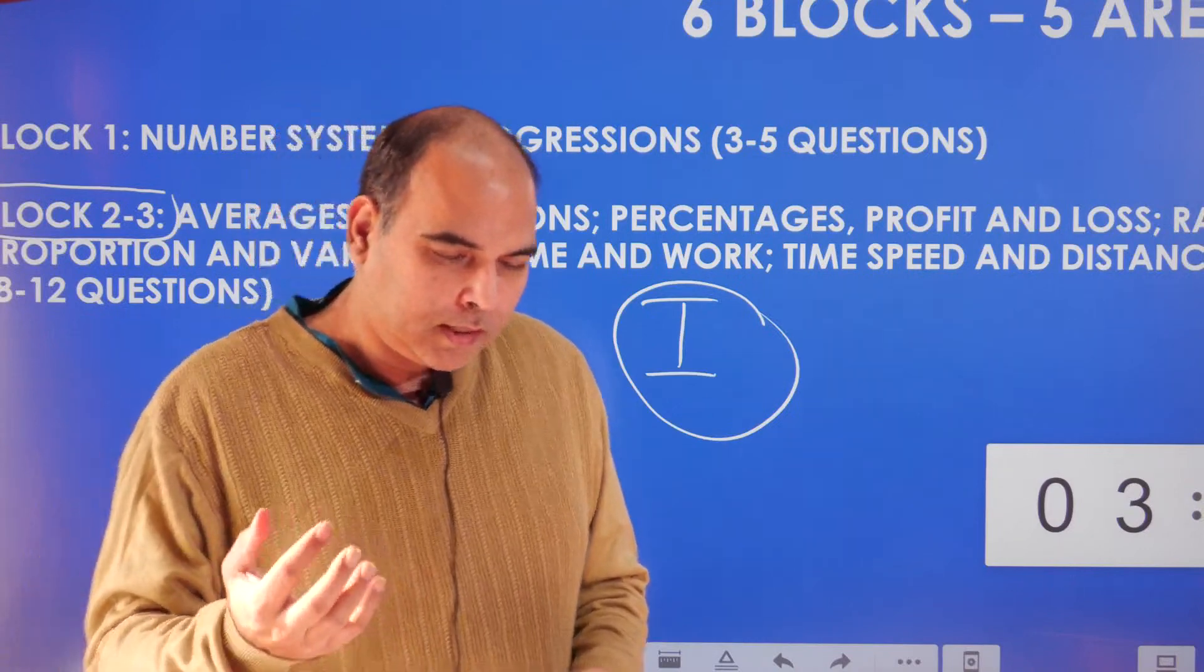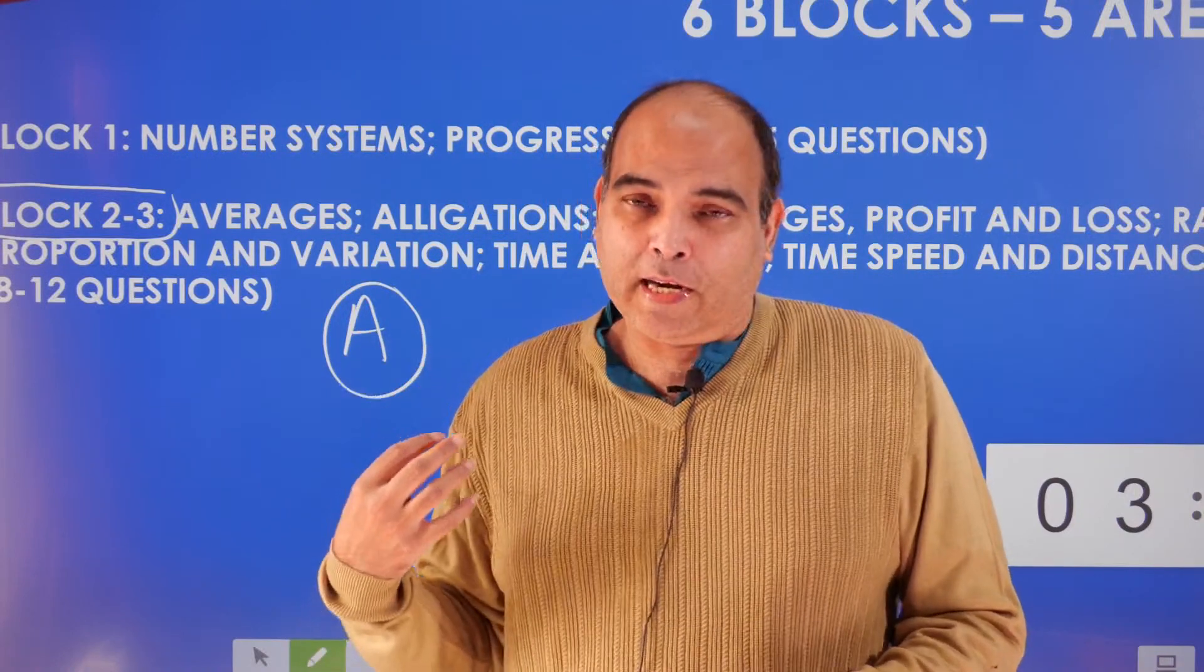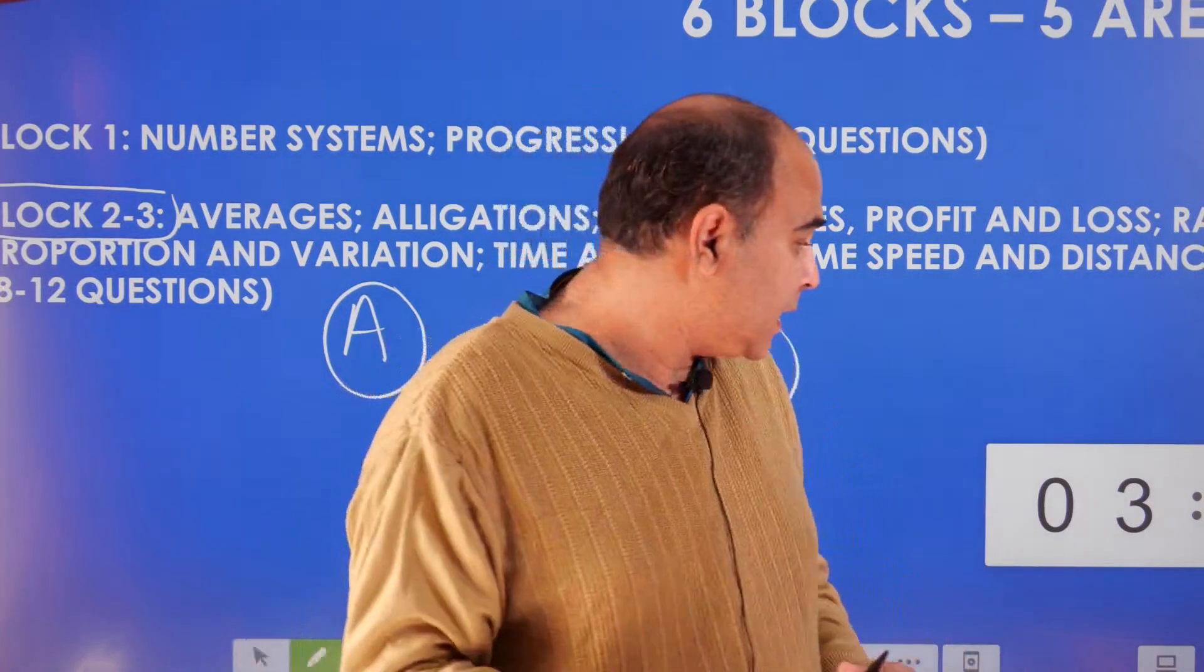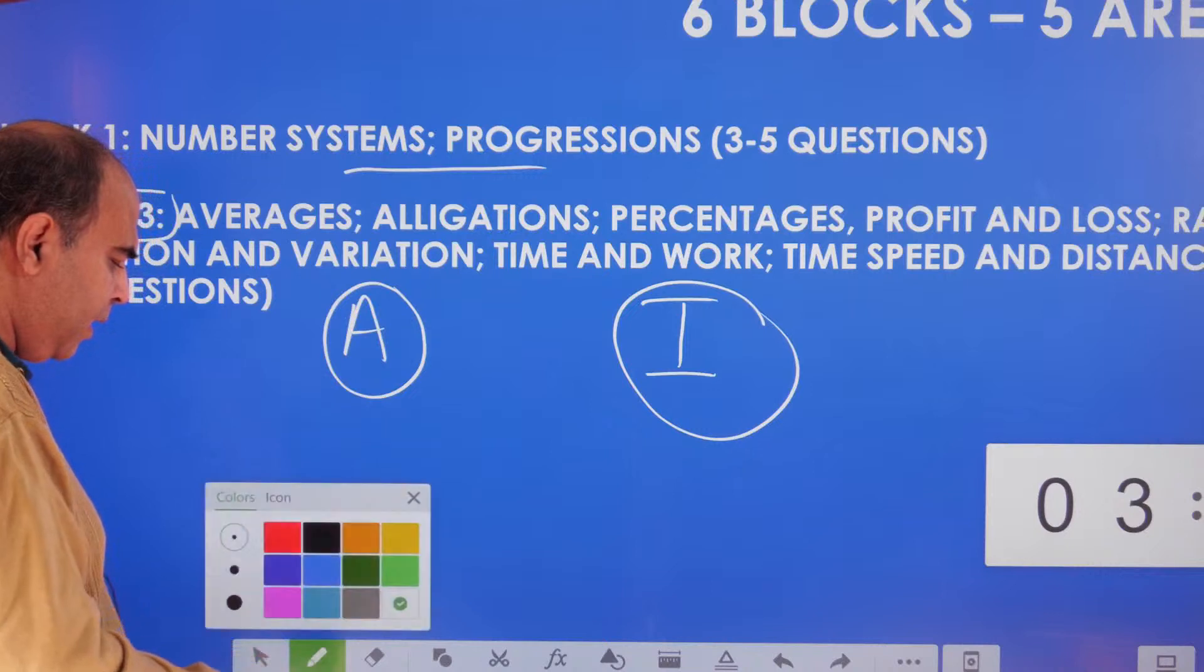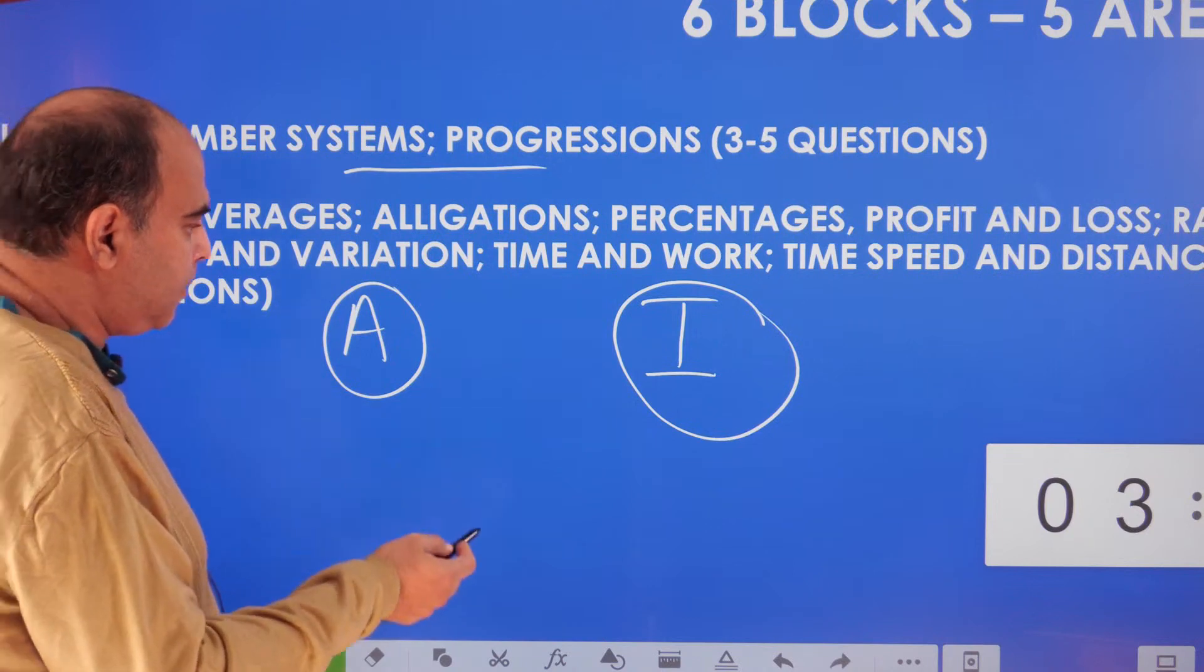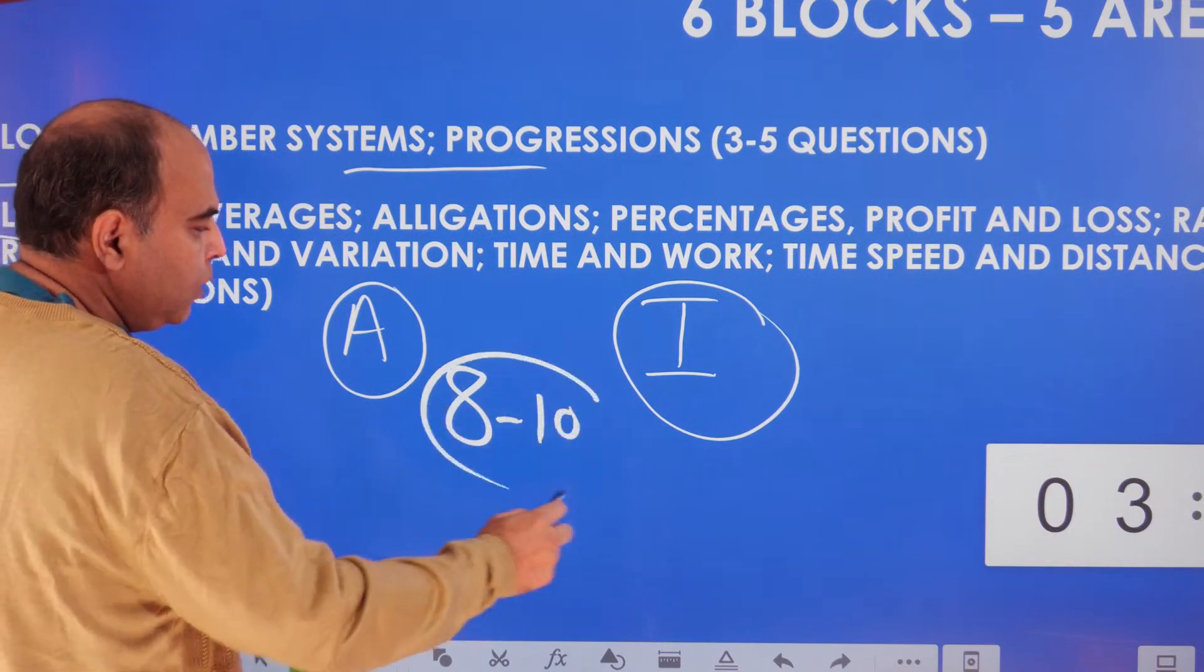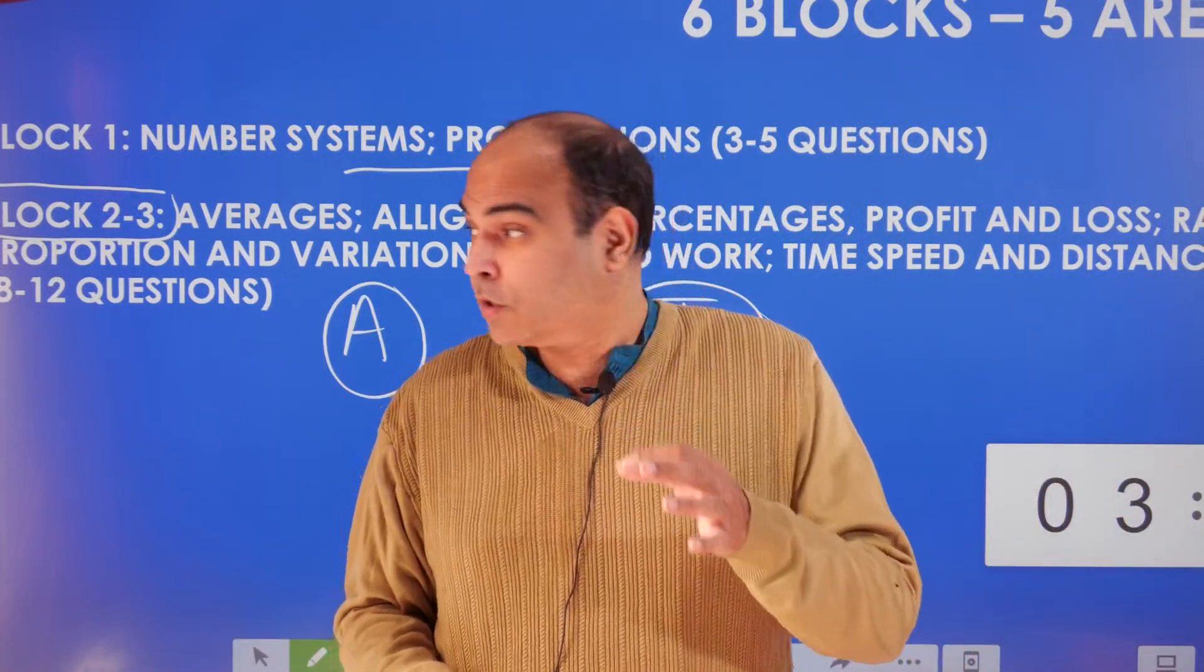When you start off, you should start off with arithmetic. Another reason to start with arithmetic is that it's something you've studied a lot in school, so a lot of people who are weak at maths can actually get their teeth into the quants part by doing this first. The second area to do is number systems and progressions. How much time should I take? If I'm a first-timer, something around one chapter per week—eight to ten weeks is a good time frame to do Block 2-3 for the first time.